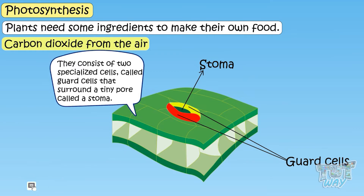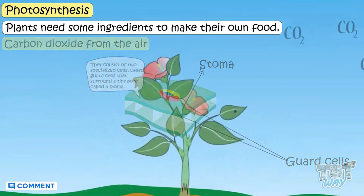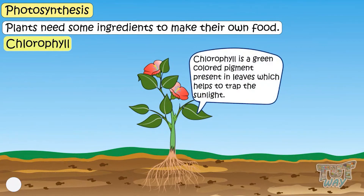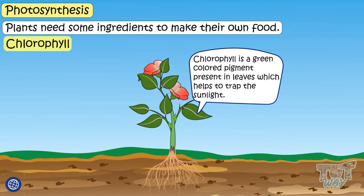The next ingredient is chlorophyll. It is a green pigment which is present in the leaves, and this green pigment, chlorophyll, helps the plant to trap the sunlight.